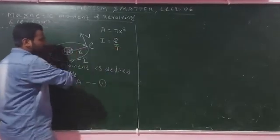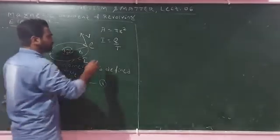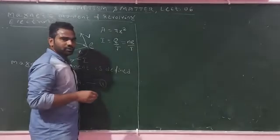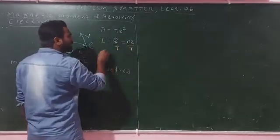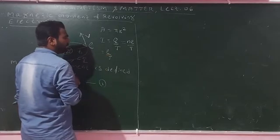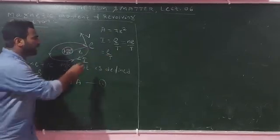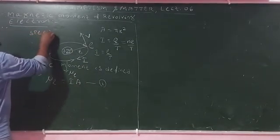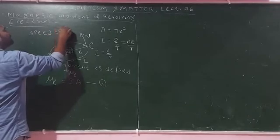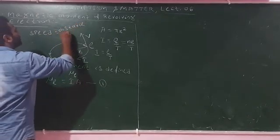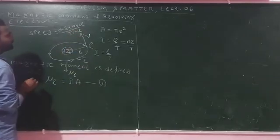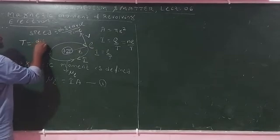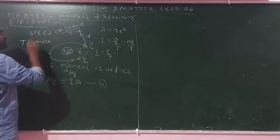Q divided by T is the charge per unit time, where T is the time taken by the particle to complete one revolution. Using the formula Q equals NE, for one electron Q equals E. So I equals E divided by T. The speed formula is distance divided by time.